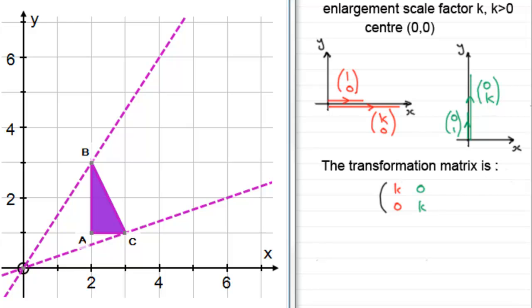And that completes our transformation matrix. We can check that this works. Let's say we take an example where k equals 2, where we're going to enlarge this triangle by a scale factor of two. So when k equals 2, the transformation matrix would be (2,0; 0,2).